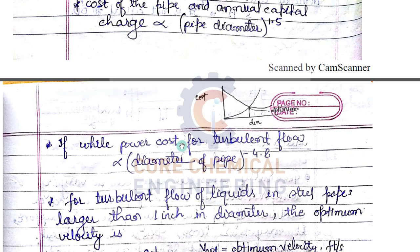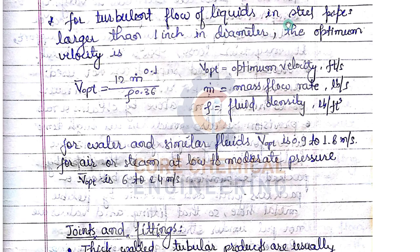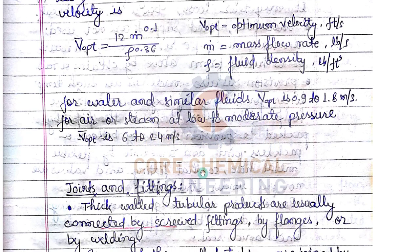For turbulent flow of liquid in steel pipes larger than one inch diameter, the optimum velocity is: v_optimum = 1.2 × ṁ^0.1 / ρ^0.43 (in feet per second, where ṁ is mass flow rate in lb/s and ρ is density in lb/ft³). For water and similar fluids, v_optimum is 0.9 to 1.8 m/s; for air or steam at low to moderate pressure, it is 6 to 24 m/s.